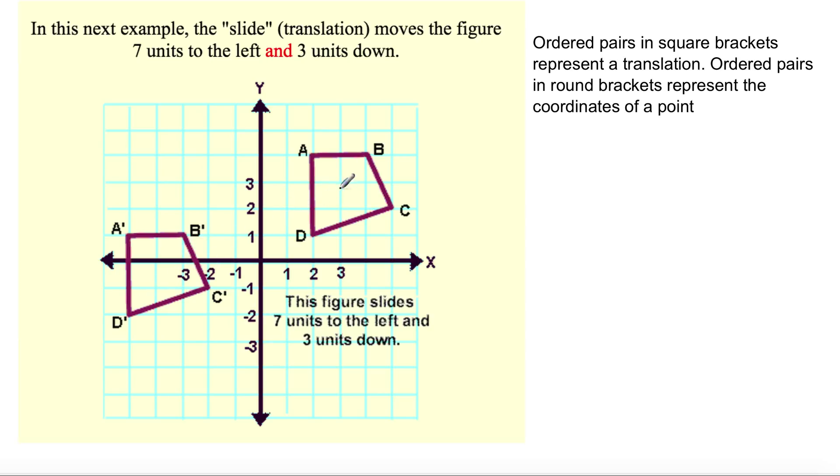Same shape. Quadrilateral, same exact shape. These distances are identical. To itself. But how did it move? It moved 7 units to the left, and 3 units down.